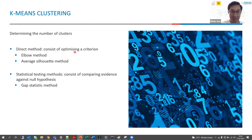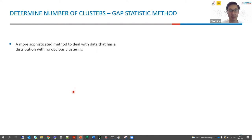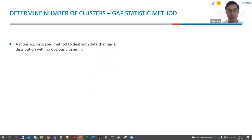Now let us look at the statistical testing method — the gap statistic method. This is a more sophisticated method to deal with data that has a distribution with no obvious clustering. For example, if you are given a dataset that is well spread out and you can't really identify clusters within it, the gap statistic method might be useful.